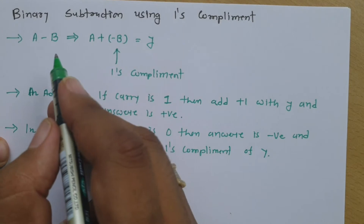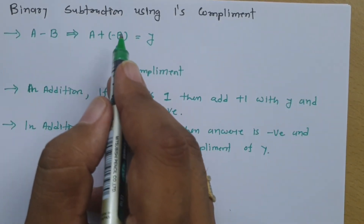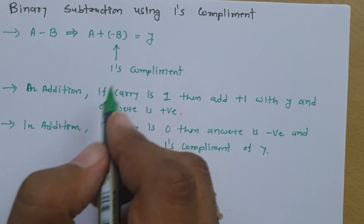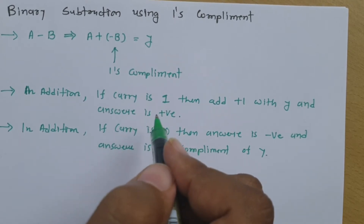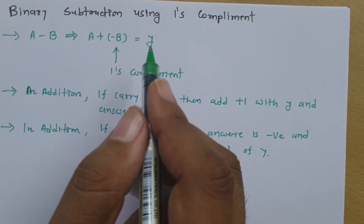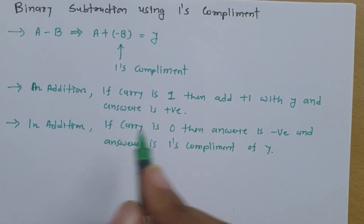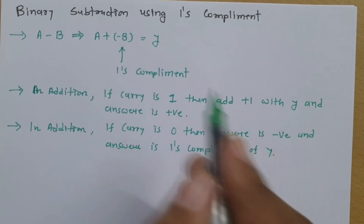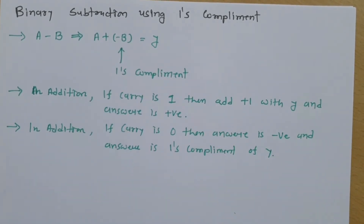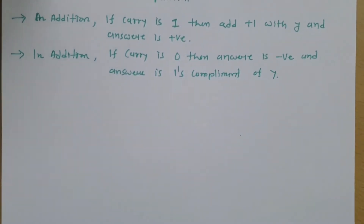Ultimately, we will be performing A plus the one's complement of B, and observing whether carry is one or not. If carry is one, the answer is positive and equals Y plus one. If carry is zero, the answer is negative and equals the one's complement of Y. Let us solve a few problems to make this more clear.